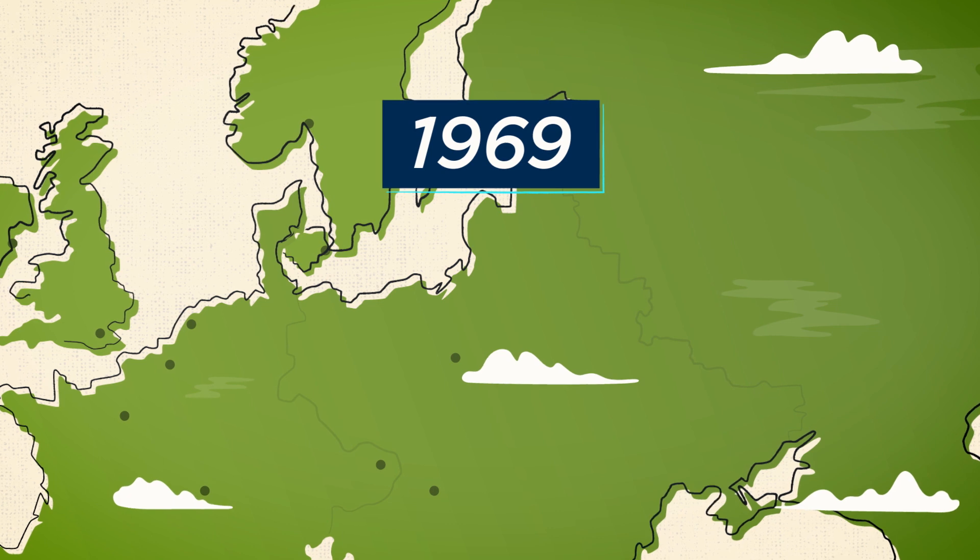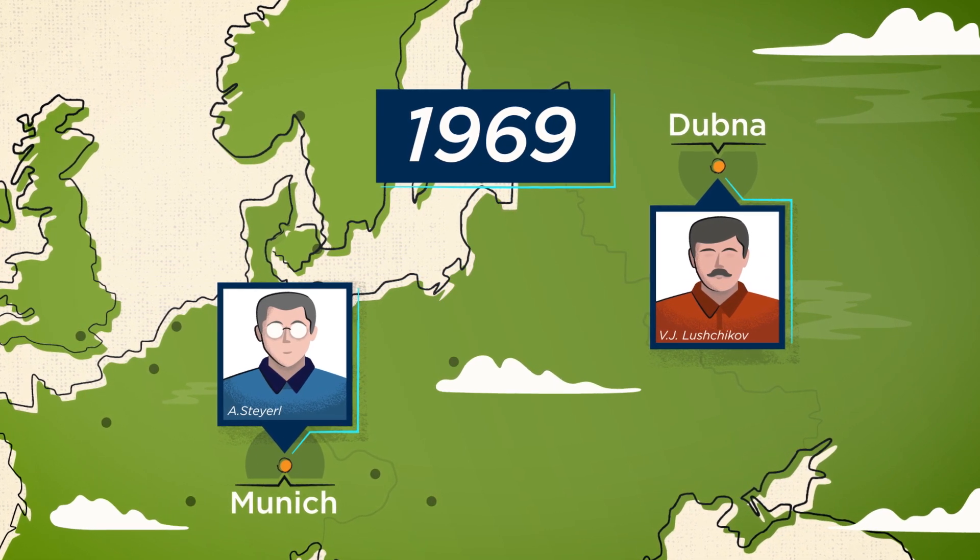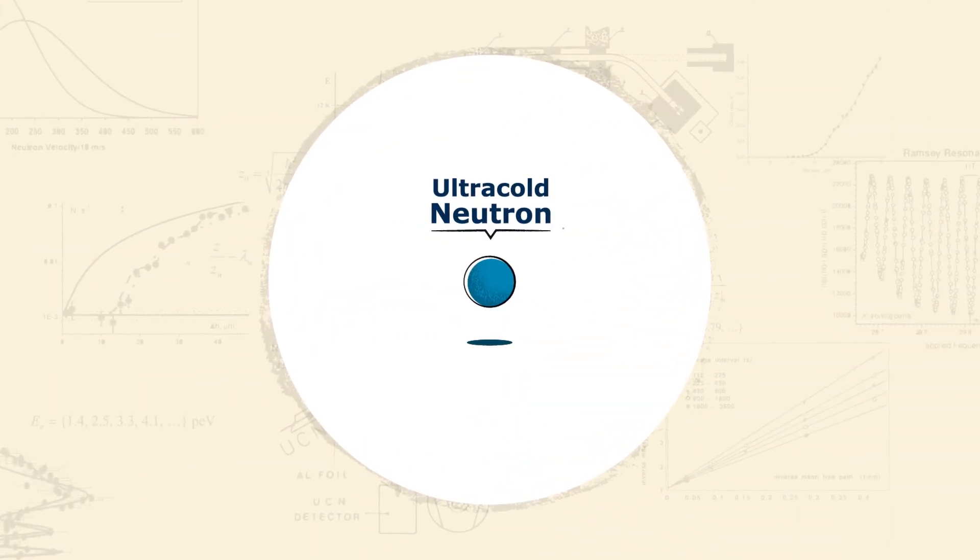In 1969, two groups of scientists, one Russian, the other German, report on the discovery of a major phenomenon in particle physics. The ultra-cold neutron.